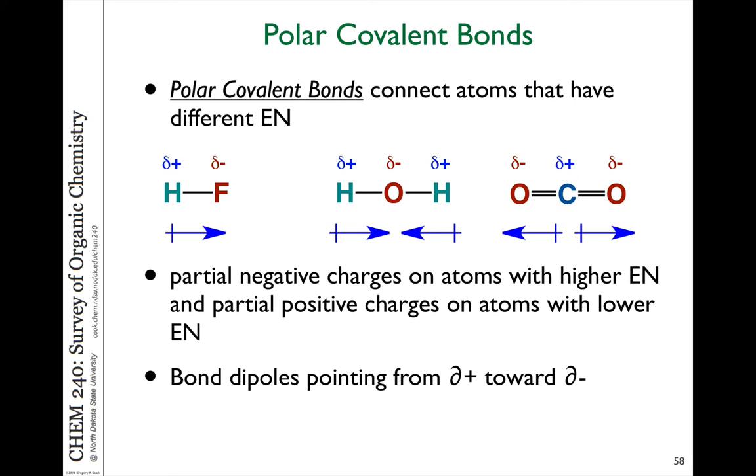We use the terms partial positive or partial negative. That's that little small delta sign meaning partially positive, partially negative to indicate that it's not a full negative or full positive charge. It's just polarized. But it's useful to think in these terms to think about where reactivity happens because reactivity in chemical reactions happens from negatively charged electrons to positively charged sites of a molecule.